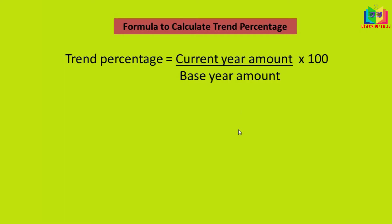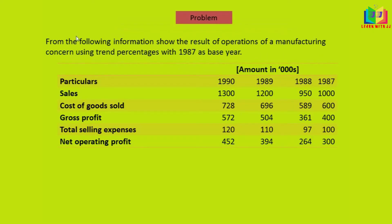Now we will see one problem so you will come to know how to use this formula. From the following information, show the results of operation of a manufacturing concern using trend percentages with 1987 as base year. Here the base year is given as 1987, and information regarding the income statement was given for 4 years. We have to calculate the trend percentage for this 4-year data. Let's start doing the problem now.